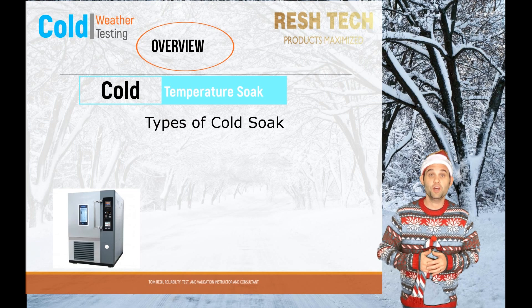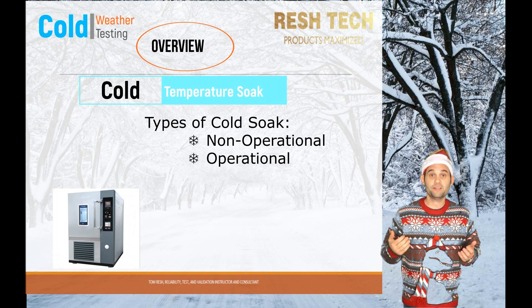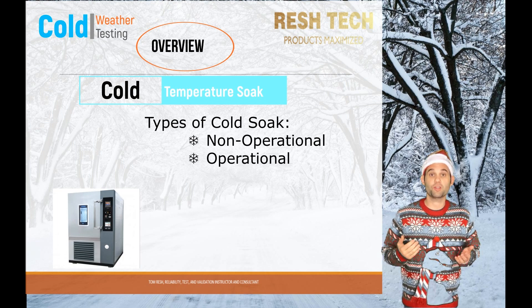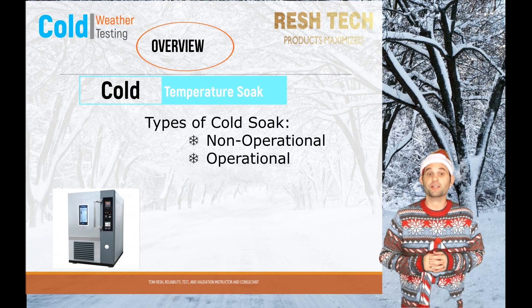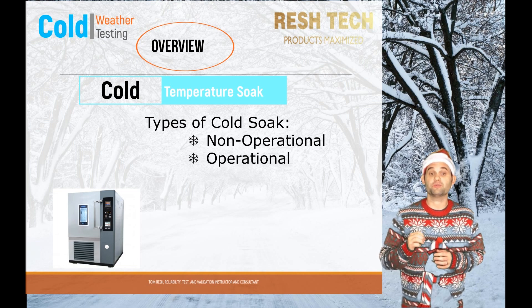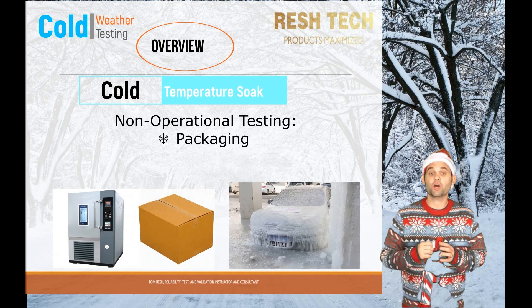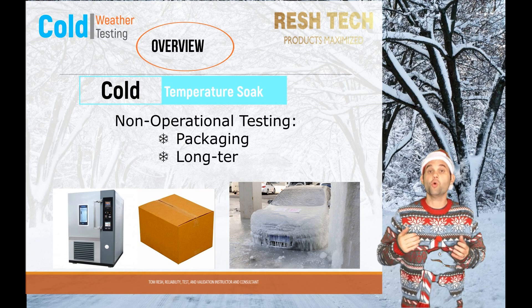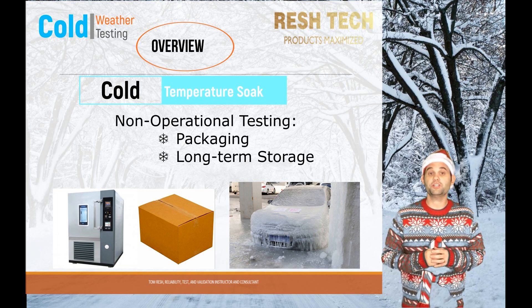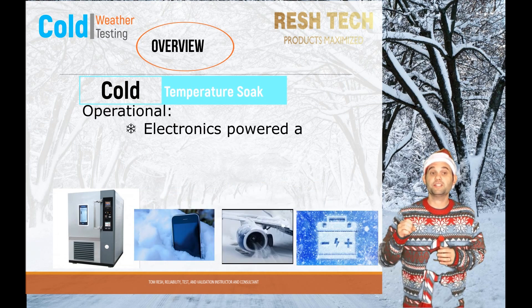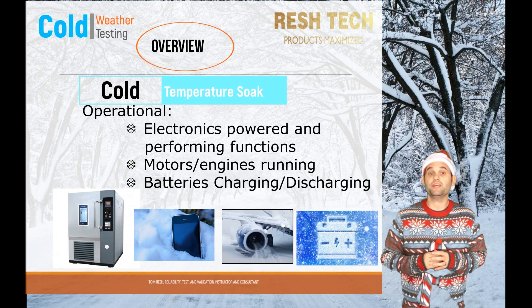Types of testing that can be performed include non-operational, which means the device or system is not powered on, and operational, which means power is applied to the system and it is operated as it would in the field or in customers' hands. Non-operational examples include packaging testing where packages are transported through harsh cold weather conditions, or storage testing where systems or vehicles are stored in cold weather. Operational examples include testing electronic devices powered on and running through various functions as they would in the end user's hands.